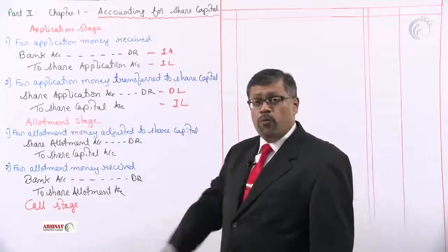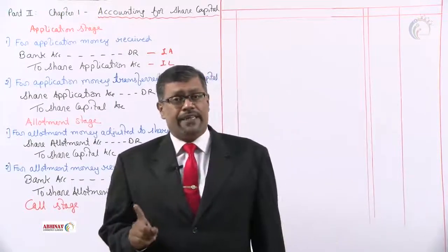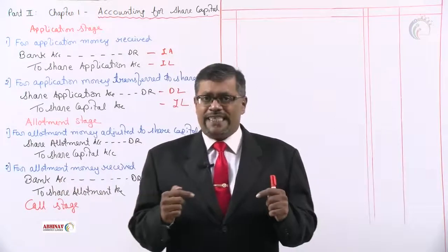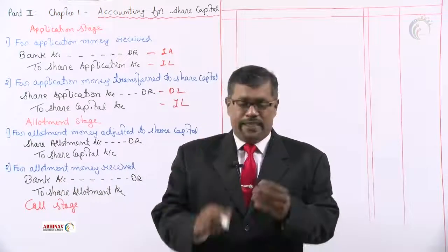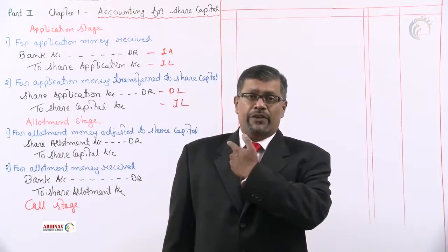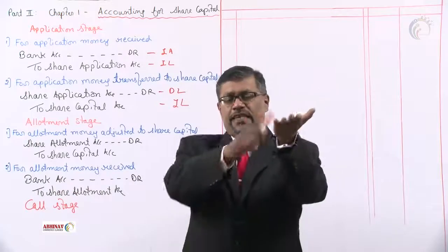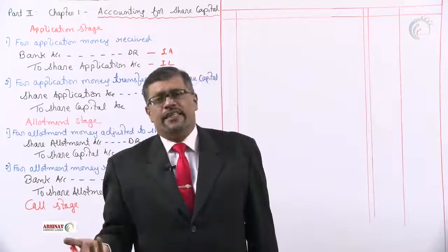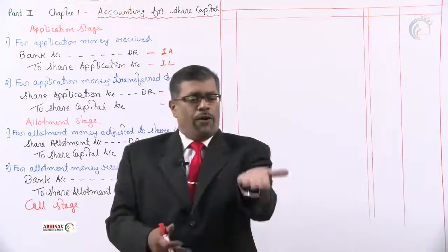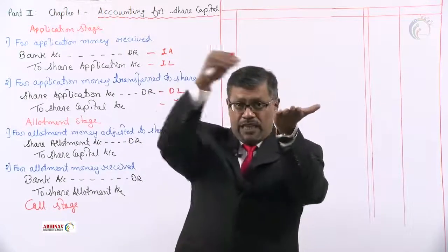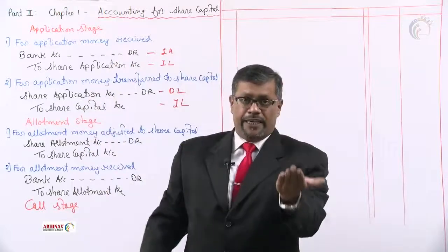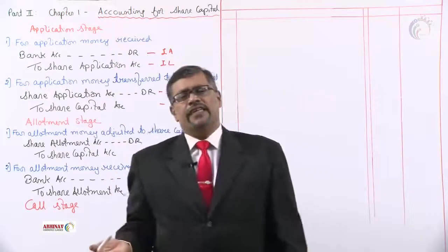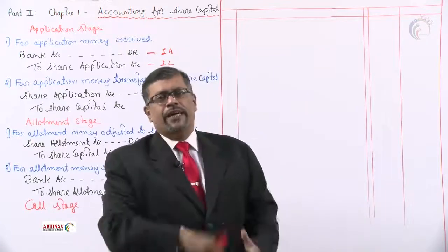Remember why each account is debited or credited — nothing is to be violated. Bank Account is debited when money is received because bank balance increases — increase in asset. Application account increases — increase in liability, so we credit it. When application money is transferred to share capital, application decreases so we debit it, and share capital increases so we credit it.